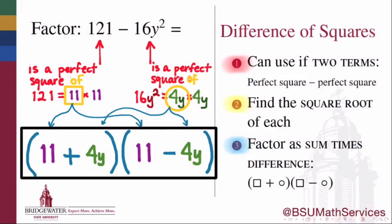Remember, as with any factorization problem, you can and should check your answer by multiplying your work back out. If you were to multiply this product of two binomials back out, you'll notice that what happens is that the terms in the middle of the FOIL, the outer term and the inner term, cancel one another out, leaving you only with 121 from the 11 times the 11, and minus 16y squared from the plus 4y times the minus 4y.